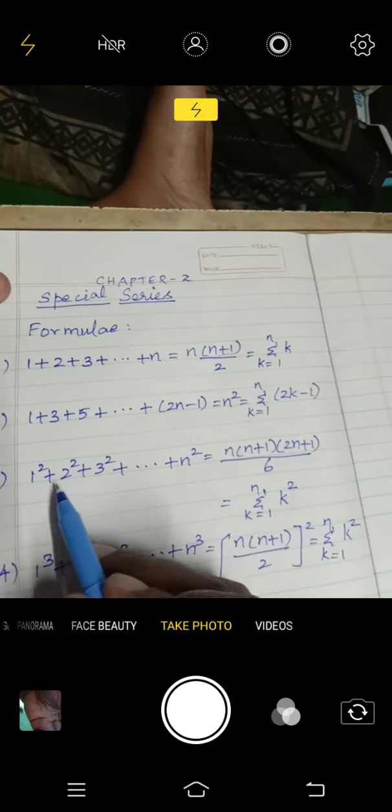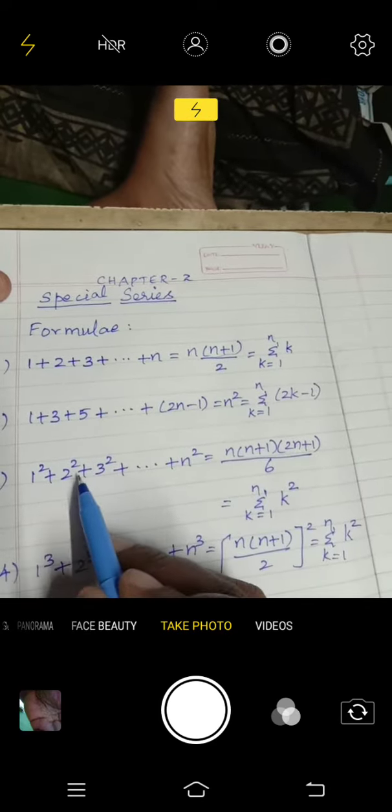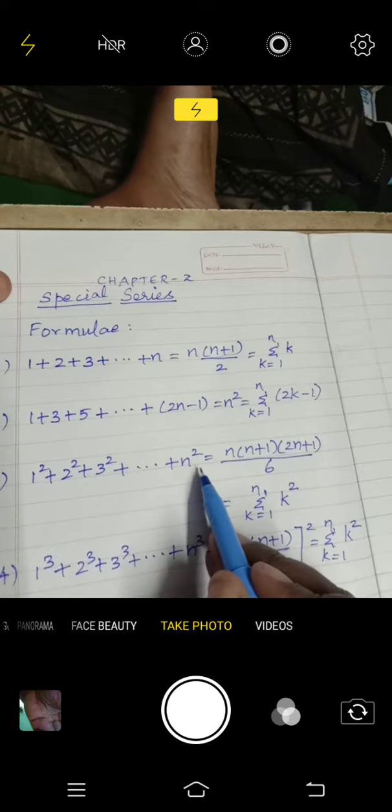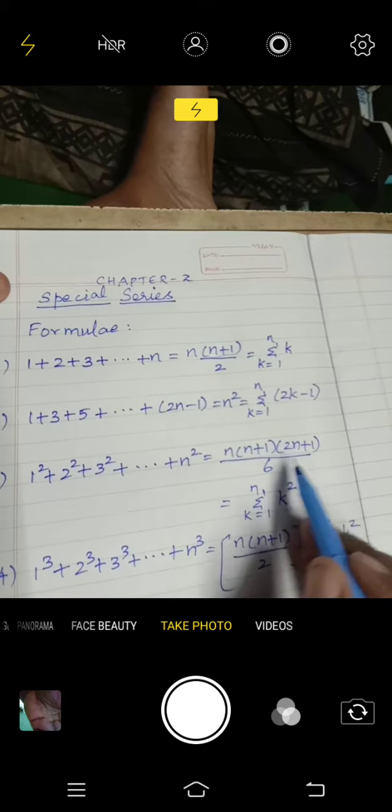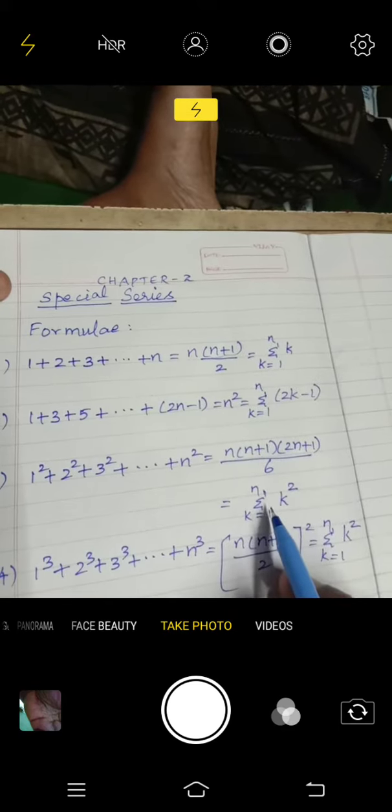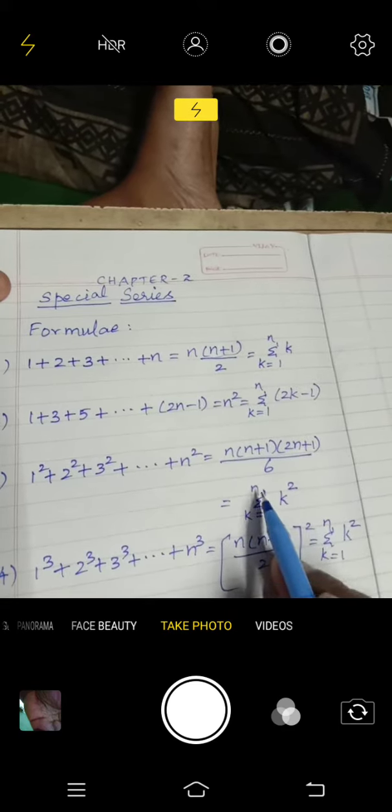Next is sum of squares: 1 square plus 2 square plus 3 square plus etc. n square. This is equal to n into n plus 1 into 2n plus 1 by 6. This can be represented as sigma k equal to 1 to n, k square.